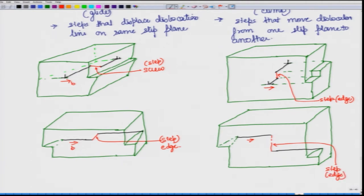In three of the cases we are getting the step as edge character, and only in one particular case the step has a screw character. Now there are few more things to look at - let us try to understand it with respect to the motion. The earlier dislocations were trying to move in this particular direction because the slip has taken place over here. It will move out over here creating a step, and in this particular case they will lead to formation of a step on this side with a negative step on the other side - that is the final stage.